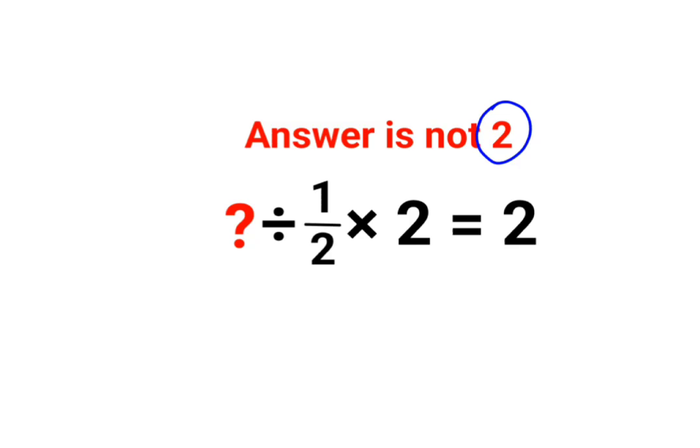Please understand what happens is here we have division and multiplication. And in mathematics division and multiplication hold equal precedence. So in sums like these you should always go from left to right.